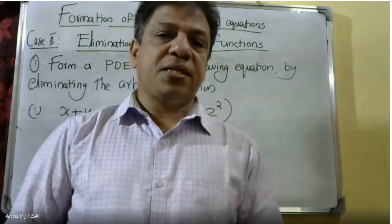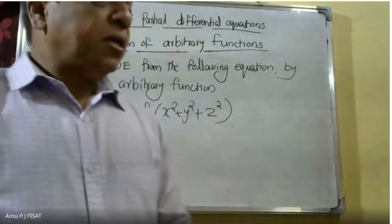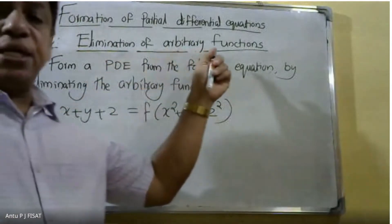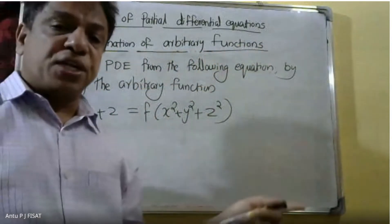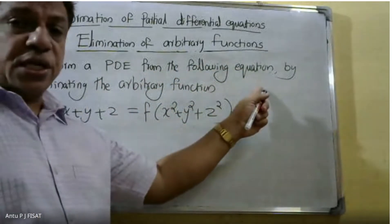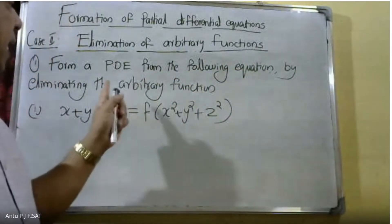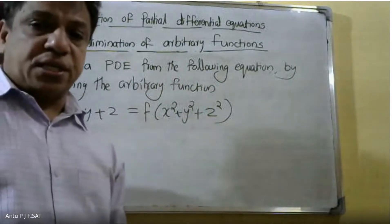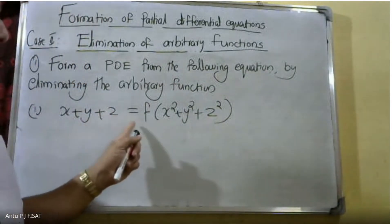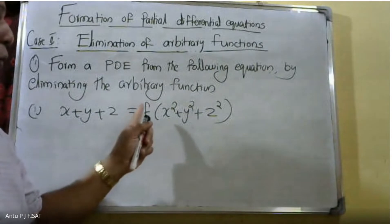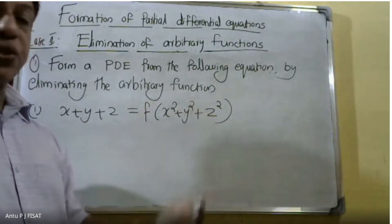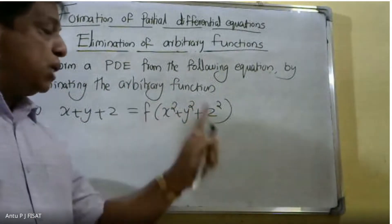Good morning students. Today we will discuss another problem in partial differentiation by eliminating an arbitrary function. The equation is: X plus Y plus Z is equal to F of X square plus Y square plus Z square. We need to eliminate the arbitrary function F.